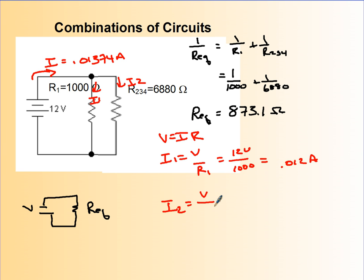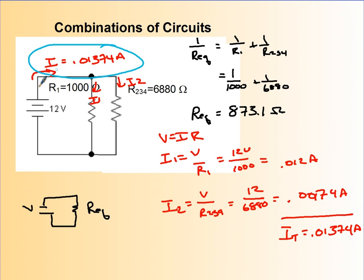And I've already done this so I'm not going to rewrite this every time. So I2 is V divided by that resistor which is R234, which is 12 divided by 6880, and I get 0.00174 amps. Now let's add these two up. 0.012 plus 0.00174, and I get a current of 0.01374 amps. And lo and behold, that is the current I started with. That tells me I did this correctly.